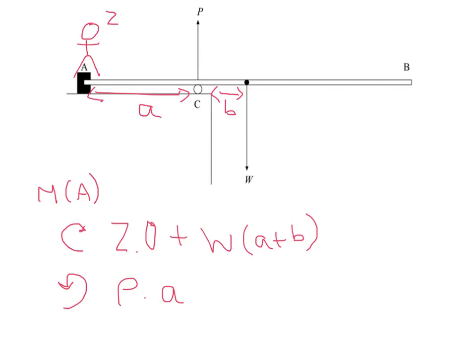So if Z is being multiplied by zero, that's going to cancel out there, and you're going to be left with P times A is equal to the weight times A plus B. So this is the condition in which you'll have the minimum upward force at P.